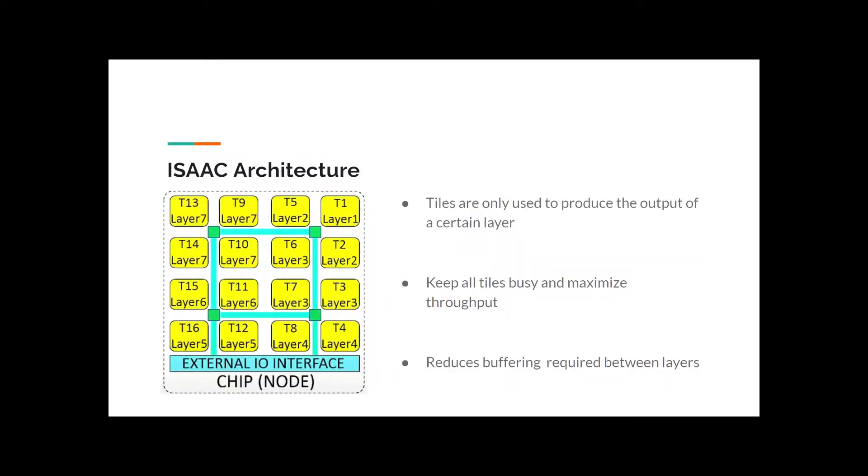However, for ISAC, tiles are only programmed to produce the output of one certain layer. So, in this case, tile 1 is used to calculate for layer 1 only. And the result of tile 1 is fed to tile 2 and tile 5 as the input. And when it finishes the computation of layer 1, the next set of data can come in, and such pipelining keeps all tiles busy and maximizes the throughput rate. And also, due to this distributed computation network, it reduces the buffering between the layers.